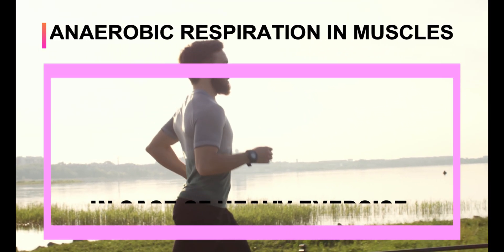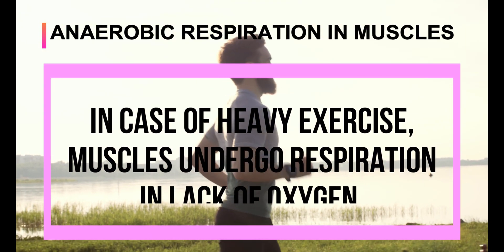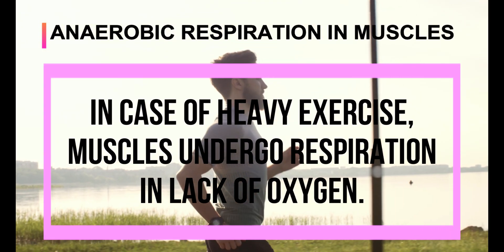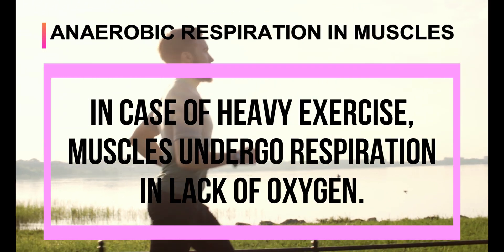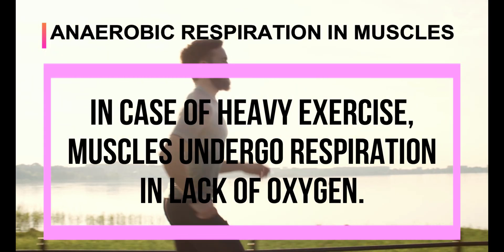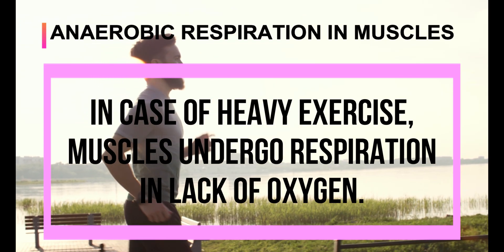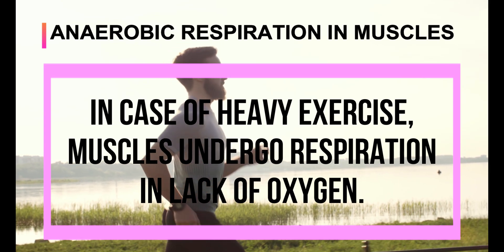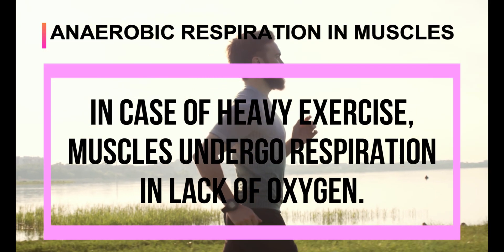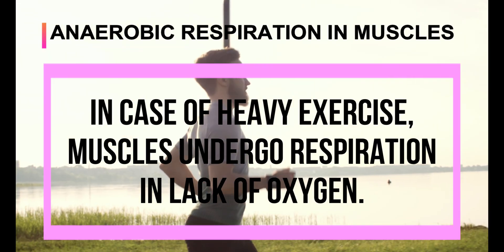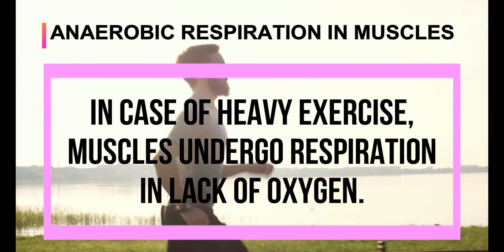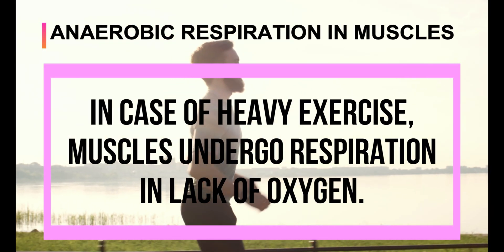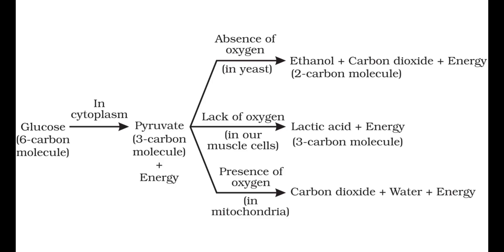In our muscle cells, when we need more energy and our muscles are doing more work, to get more energy our muscle cells start the breakdown of glucose in the absence or lack of oxygen. Here the pyruvic acid converts into lactic acid and releases energy. So that covers respiration — this flow chart shows the types of respiration and the chemical reactions involved.